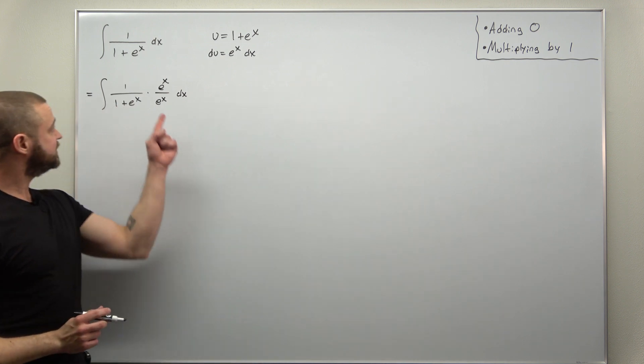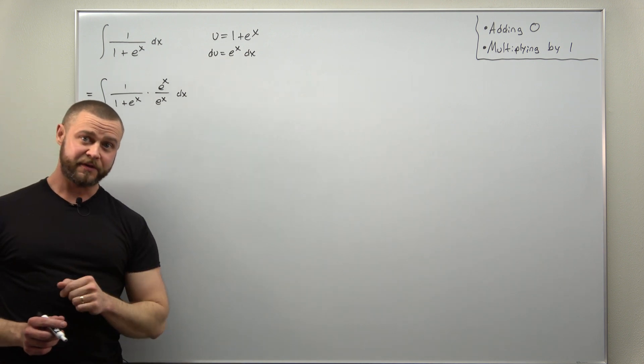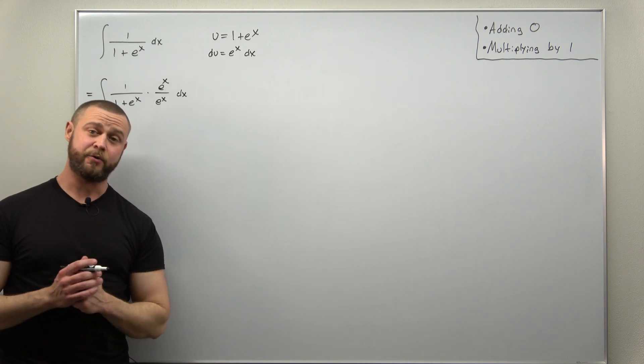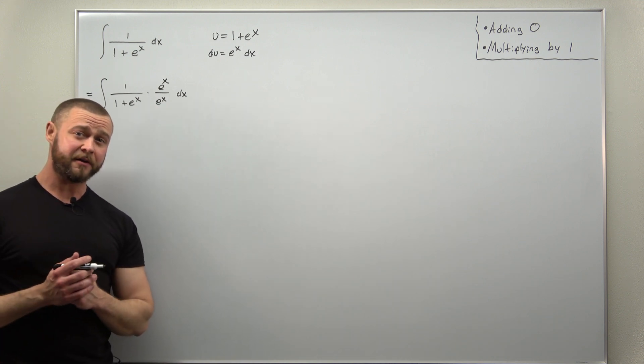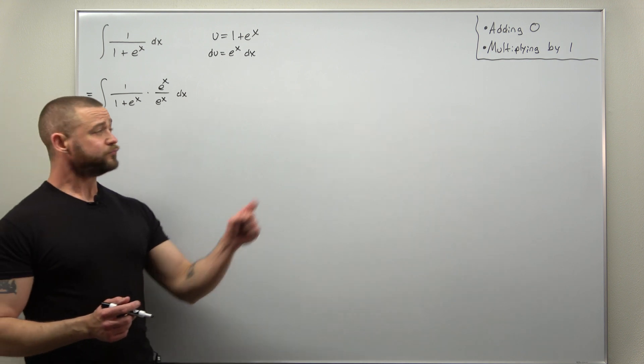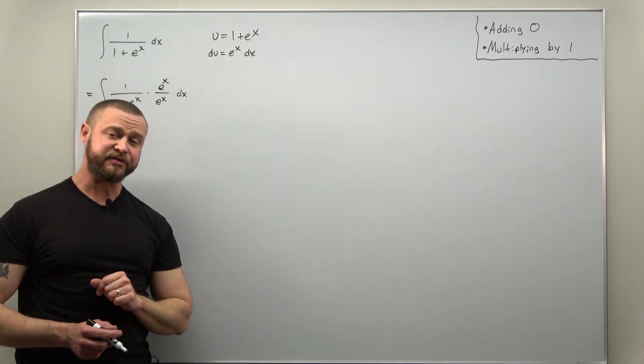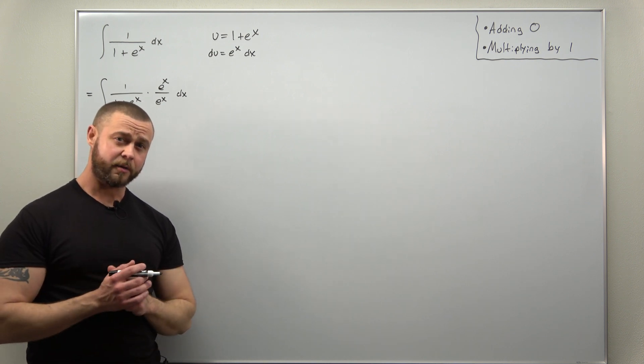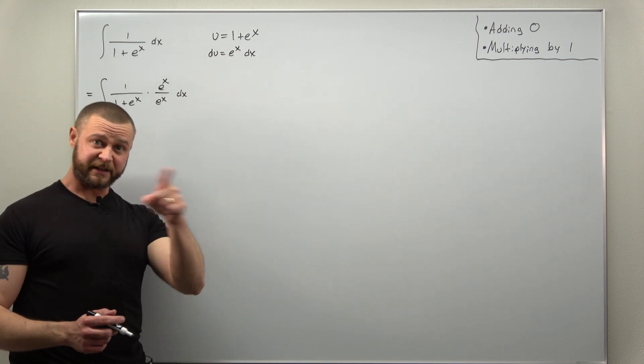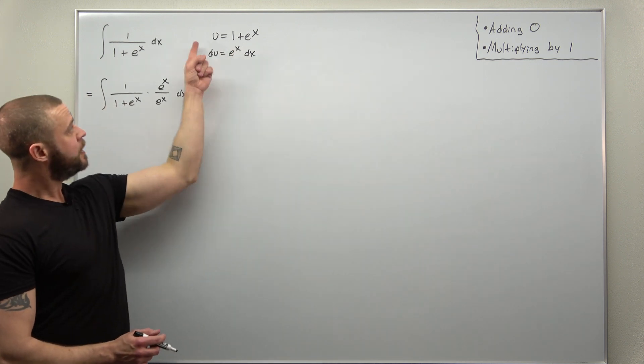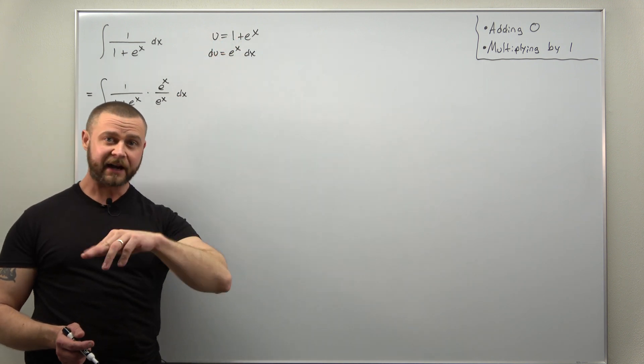And that is nice because the e to the x in the numerator, that is exactly what we can use for the e to the x that we need in du, the differential. Now we do get another factor of e to the x in the denominator, and we can deal with that by solving our substitution for e to the x. From your calc 2 course, you're probably or hopefully comfortable with that, manipulating your differential by dividing factors over, and hopefully you're also comfortable manipulating your substitution, solving for x or a different quantity within your substitution.